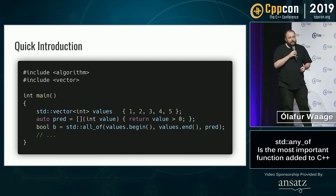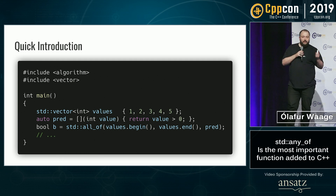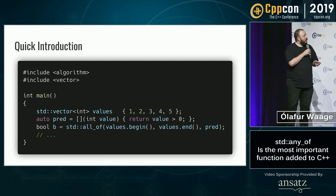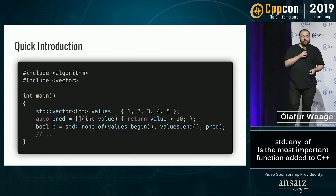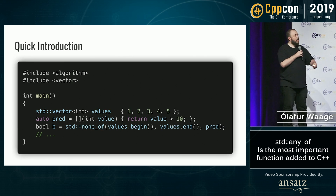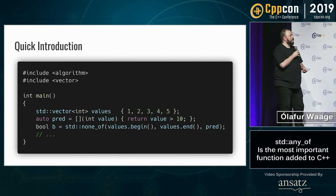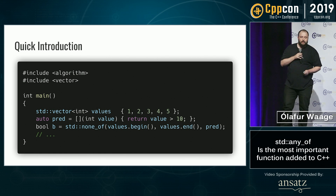There's also std::all_of, which means that any of the values has to be greater than zero, or std::none_of, where none of the values are bigger than ten. Wonderful.